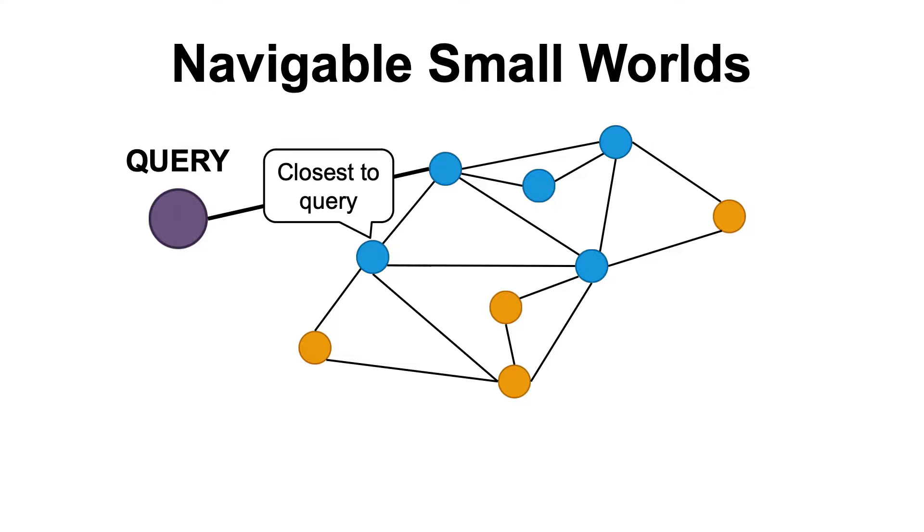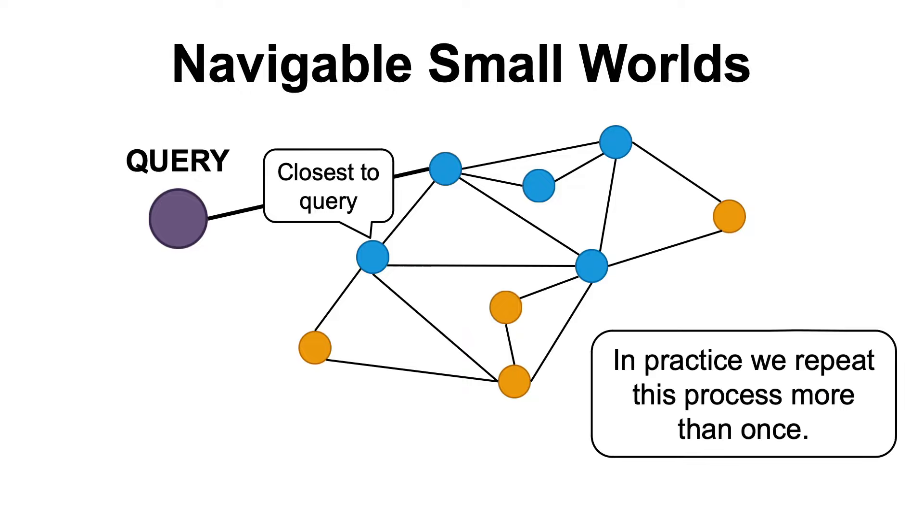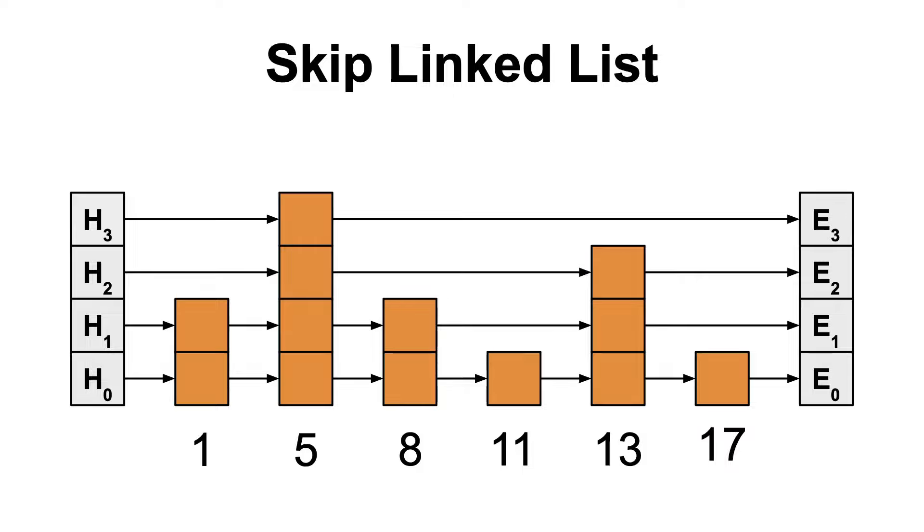And this process is repeated until we get a node where none of its neighbors are closer to the query than that node is. Also, in practice, this process of randomly picking a node in the graph and then navigating it is repeated several times to collect a larger range of nodes, which is still much faster than the brute force approach, because we are only considering a small subset of the entire database.